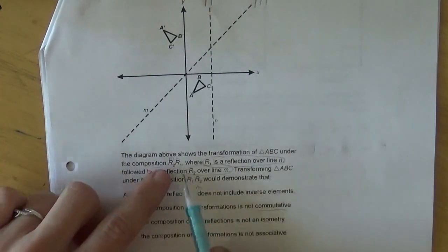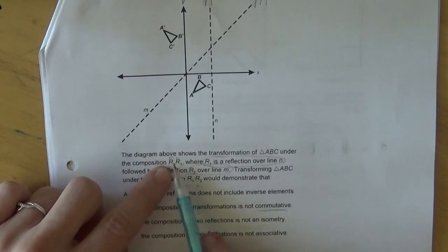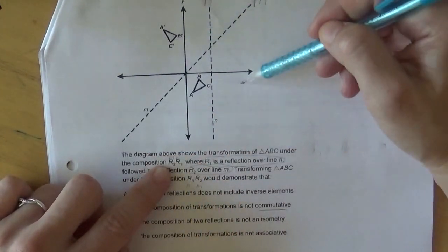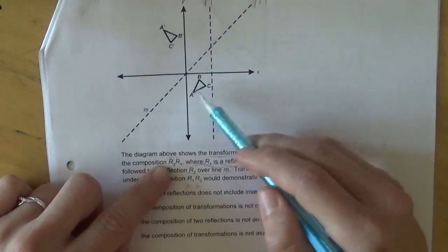So right now, they did R2, R1. They reflected it over M, then over N. So they reflected this over M, and then that over N, and they got what they got.